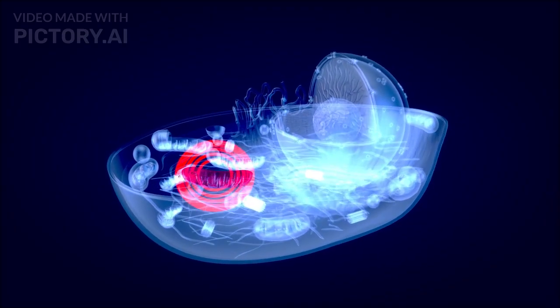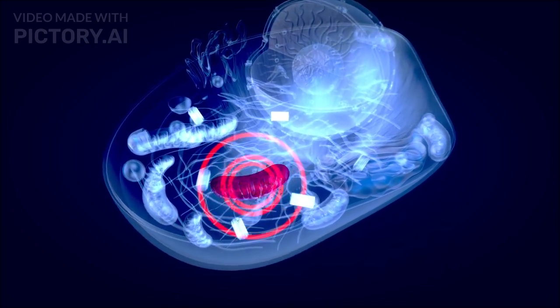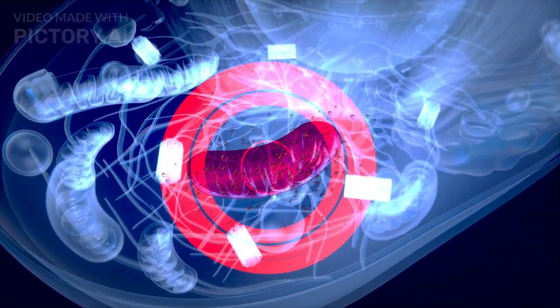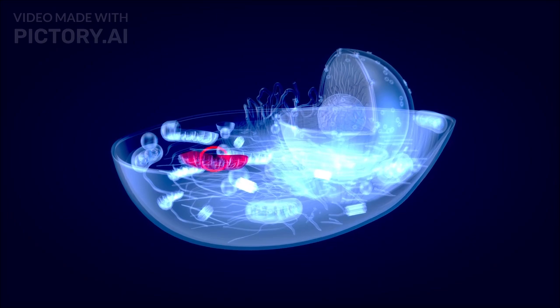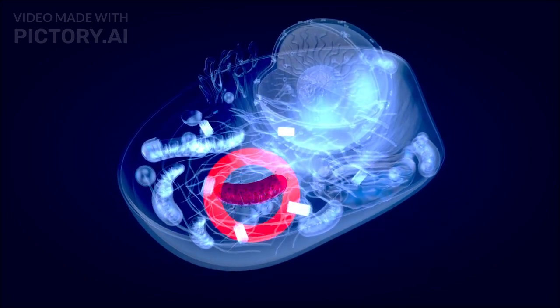The proton gradient creates potential energy, which is harnessed by ATP synthase, a protein complex that produces ATP. As protons flow back into the matrix through ATP synthase, it rotates and catalyzes the formation of ATP from ADP and inorganic phosphate.